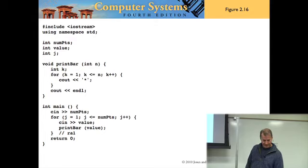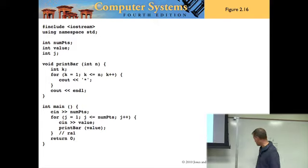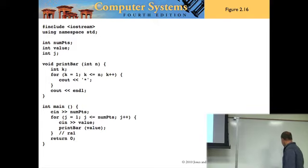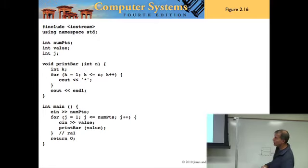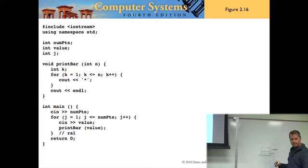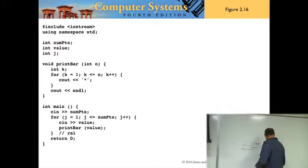How does main get called? The operating system calls main. So what does the runtime stack for main look like before it calls print_bar? Just retval and return address — because the rest (num_points, value, J) are all global. A function is not a variable, so print_bar doesn't appear there.